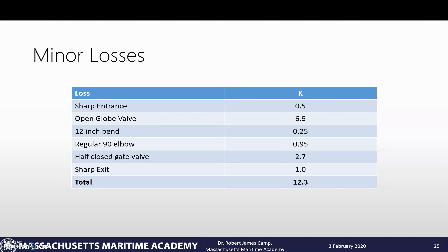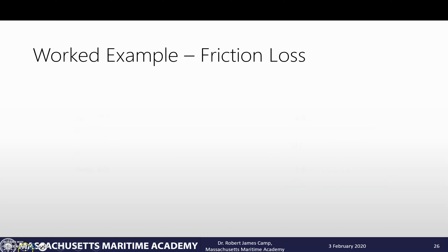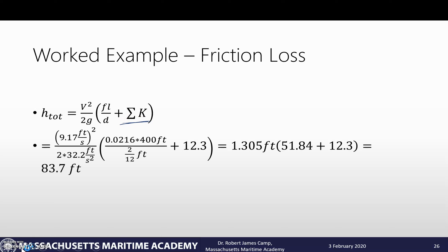At this point, let's calculate our total head. The total head is V² over 2g times (fL over d plus the sum of the minor K's). This is really the only new thing that we have in this problem. We just plug our numbers in: 9.17 feet per second squared divided by twice gravity, so 2 times 32.2 feet per second squared. The units here will end up being feet, which is what we expect.